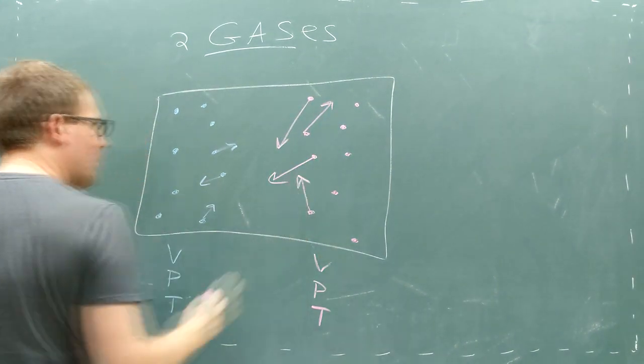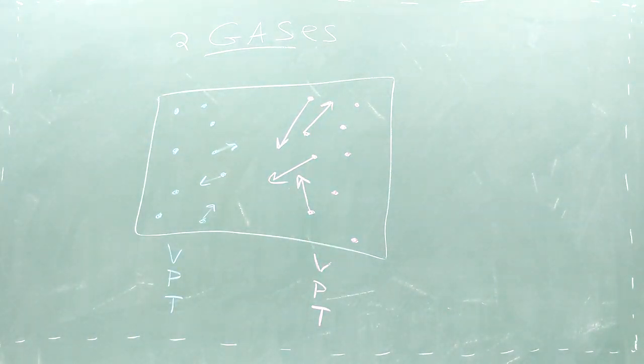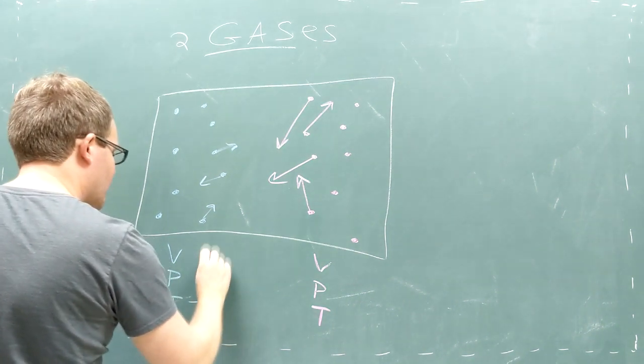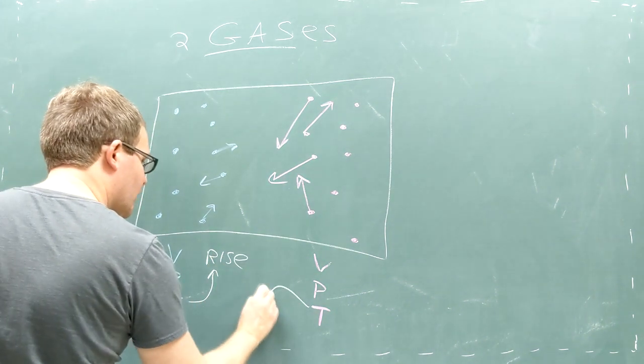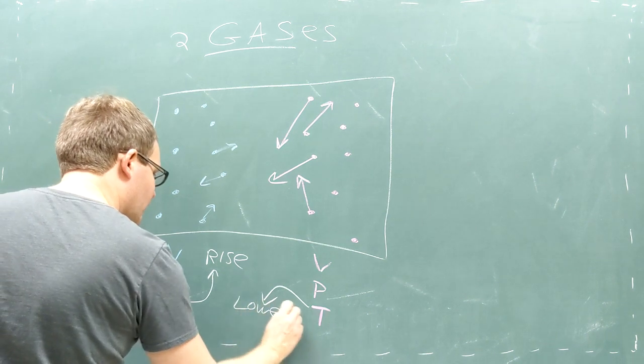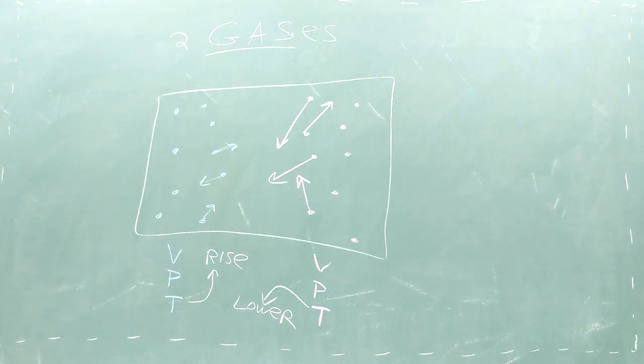That means we would give the red and blue particles random speeds like before, but the red particles start out faster on average than the blue. When the gases mix, the particles will begin to collide and exchange energy so that the red gas will lower in temperature and the blue gas will rise in temperature.